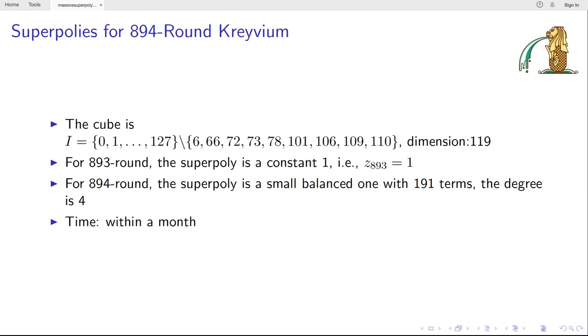The third application is for Kreyvium. We use a cube with dimension 90 like this. For this cube, the Super-Poly of 893 rounds is a constant 1. And for 894 rounds, the Super-Poly is a small balanced one with 91 terms. The degree is 4. And although this Super-Poly is very simple, it costs a month to recover it.